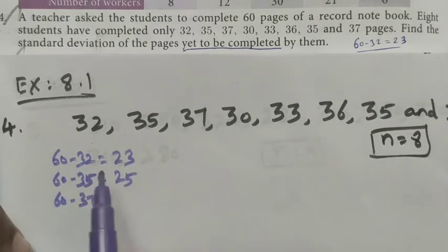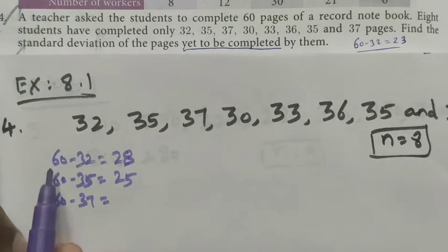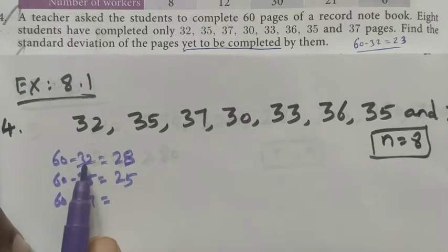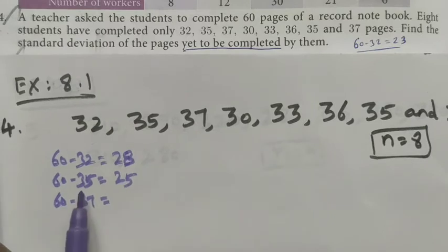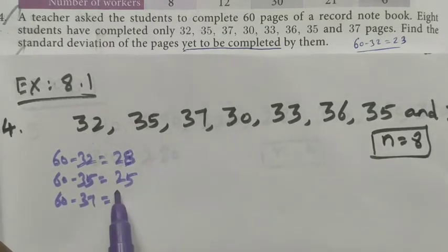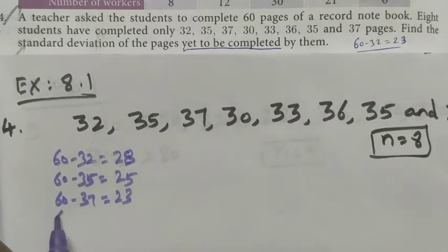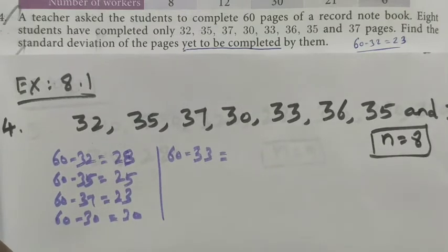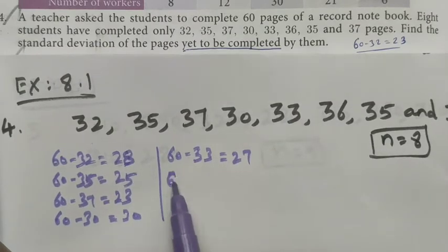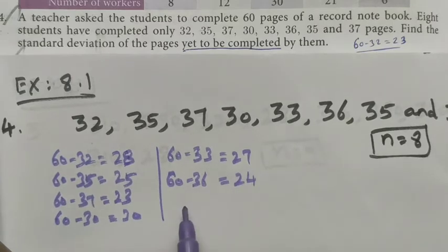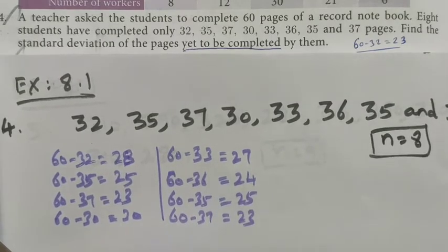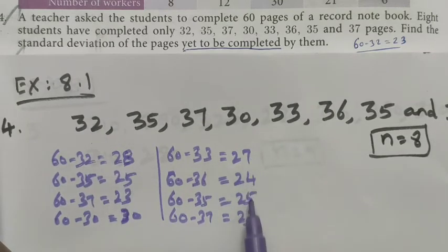To clarify: 60 minus 32 = 28, so that student completed 32 pages and has 28 yet to complete. Continuing: 60 minus 35 = 25, 60 minus 37 = 23, 60 minus 30 = 30, 60 minus 33 = 27, 60 minus 35 = 25, and 60 minus 37 = 23. So we get 8 new data values representing pages yet to be completed, and we will find the standard deviation of this new data.